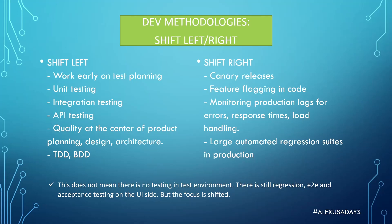Another shift right approach is feature flagging in code. A feature you release can essentially be turned off immediately if something is broken in production. This is ideally done in a CI/CD approach where you're releasing smaller batches — not waiting three months to release a huge build, but ideally releasing every week or so. With feature flags, if something is not working in production as expected, you immediately turn that feature off without users even noticing that something was breaking the system.